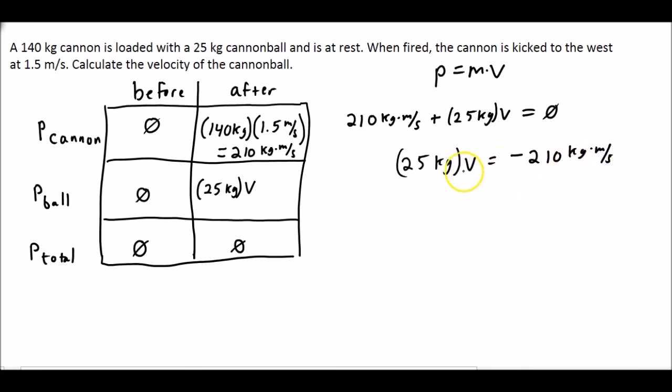Now we need to still get velocity by itself, so we'll divide both sides by 25 kg. And when we do that, we find that our velocity is negative 8.4 meters per second.